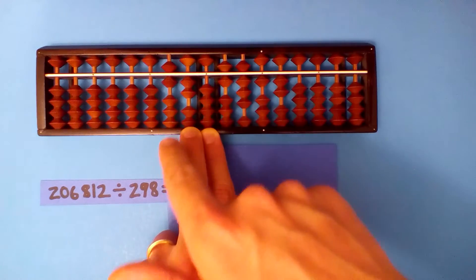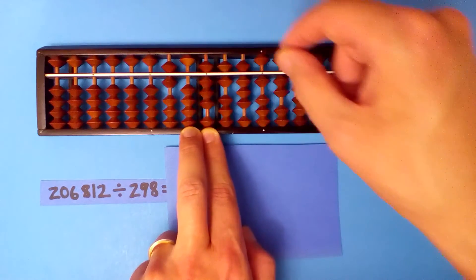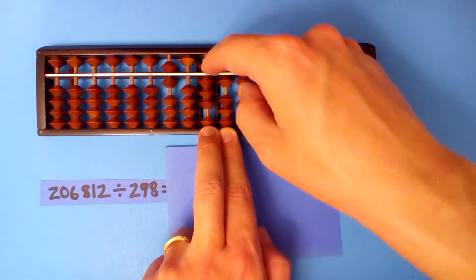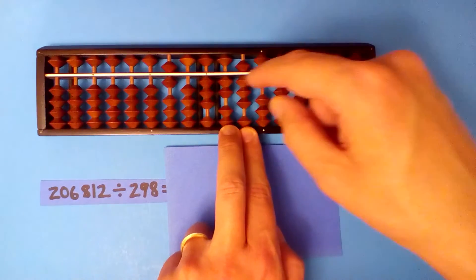Three goes into twenty six times. Now we multiply and subtract: six times two twelve, six times nine fifty-four, six times eight forty-eight.